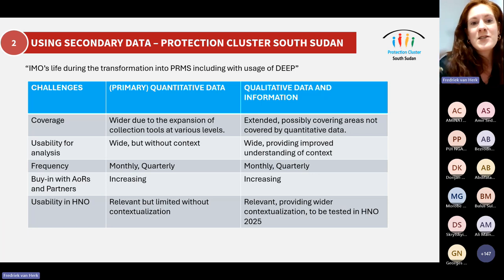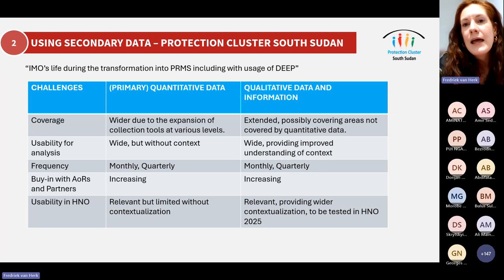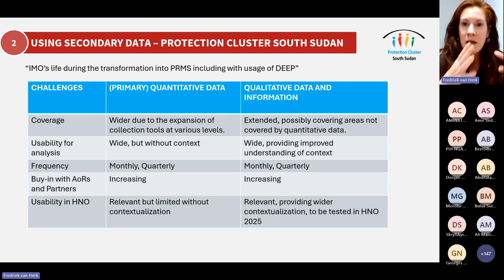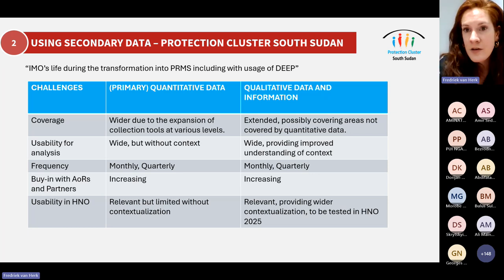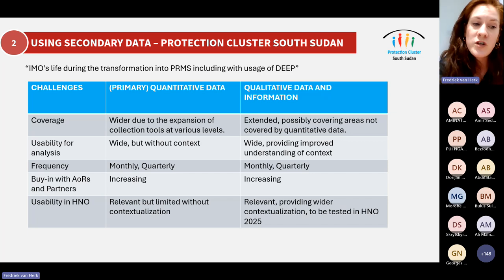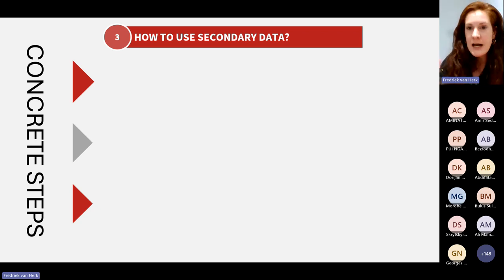The process Dorian is describing is really interesting because from the protection monitoring system and the PROMO working group already set up, they had a lot of the primary data. From our side, we could bring in more qualitative secondary data. The process they're doing on a monthly basis is really like a mini joint analysis workshop almost every month, with a lot of engagement with the partners and protection cluster members on making sure the analysis is a collective and joined-up process. Now that we've seen what we're providing in terms of qualitative and secondary data support and how it ties into a cluster process, I want to focus a little on how we actually do this.